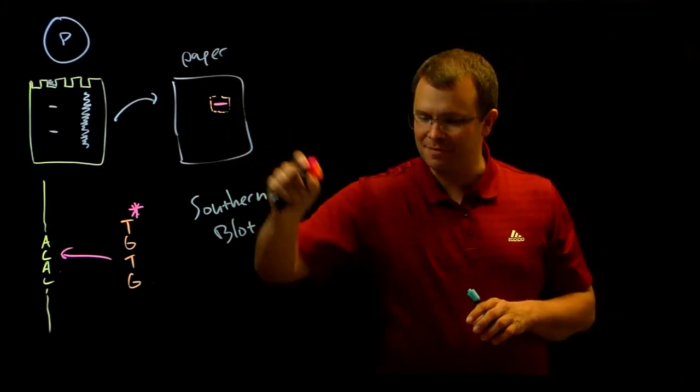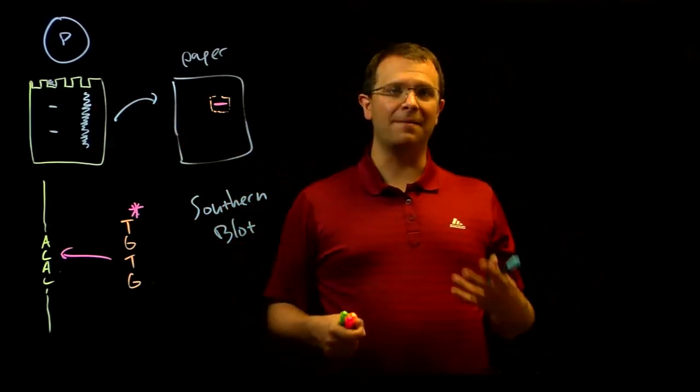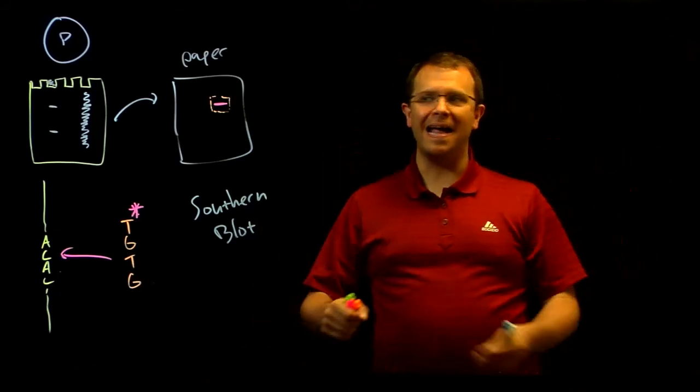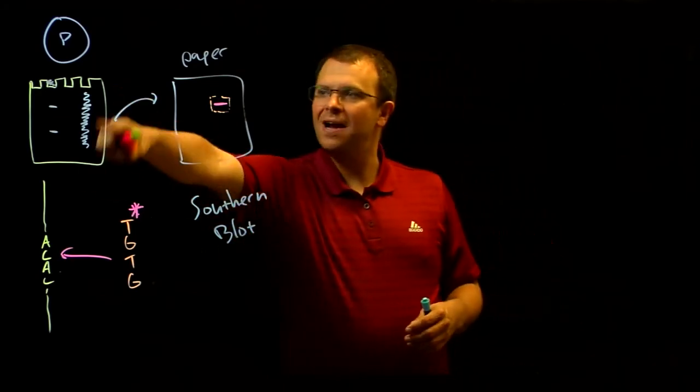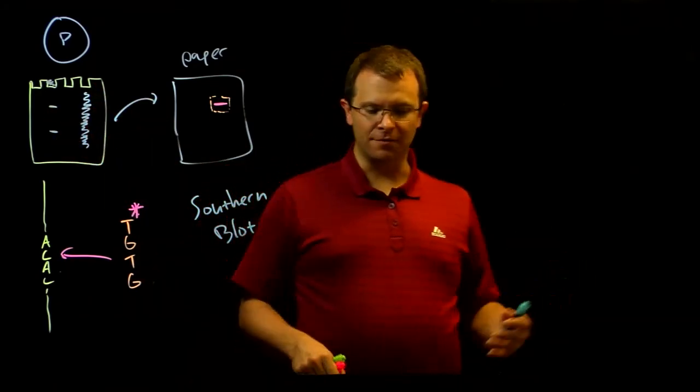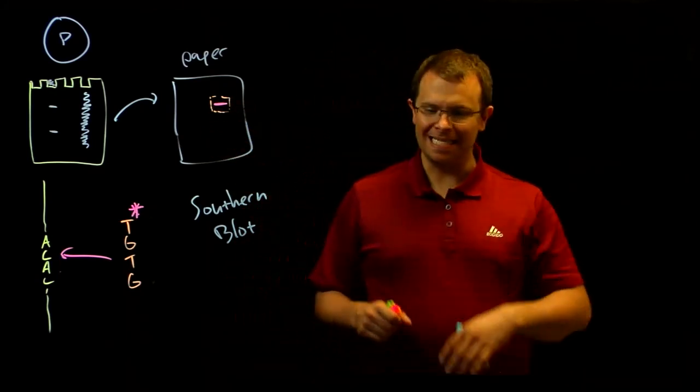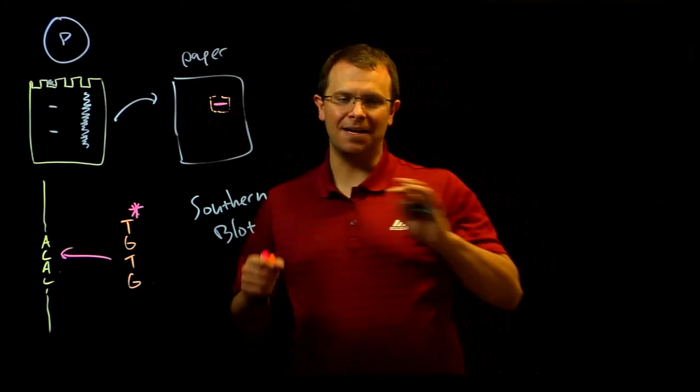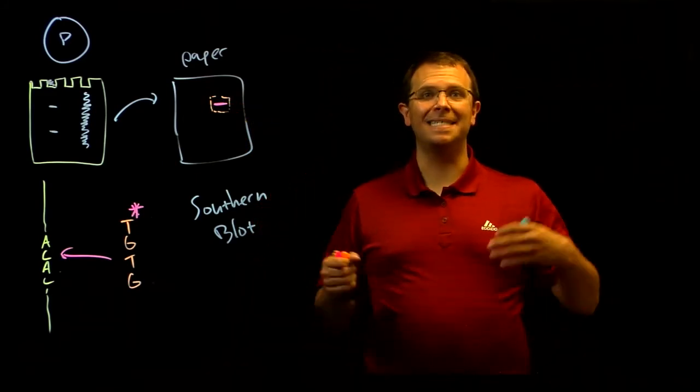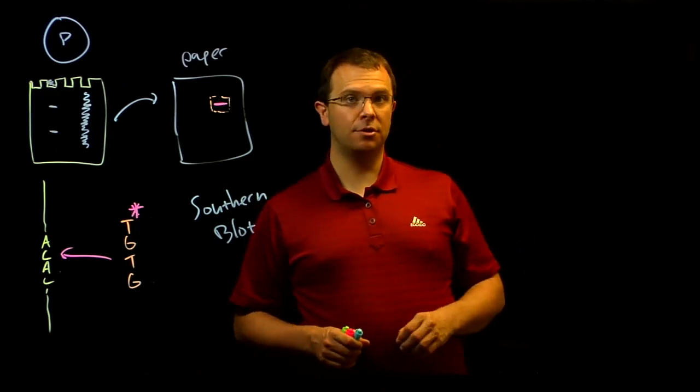And so a Southern blot like this can tell me the size of a fragment of DNA, just like gel electrophoresis, but it can find that piece of DNA in a very complex mixture, which is not something that gel electrophoresis is good at. However, it just lets me see it. It lets me measure the size of that band. What if I want to capture that fragment? What if I want to analyze it further? Our last method, which is called PCR, can help us do just that.